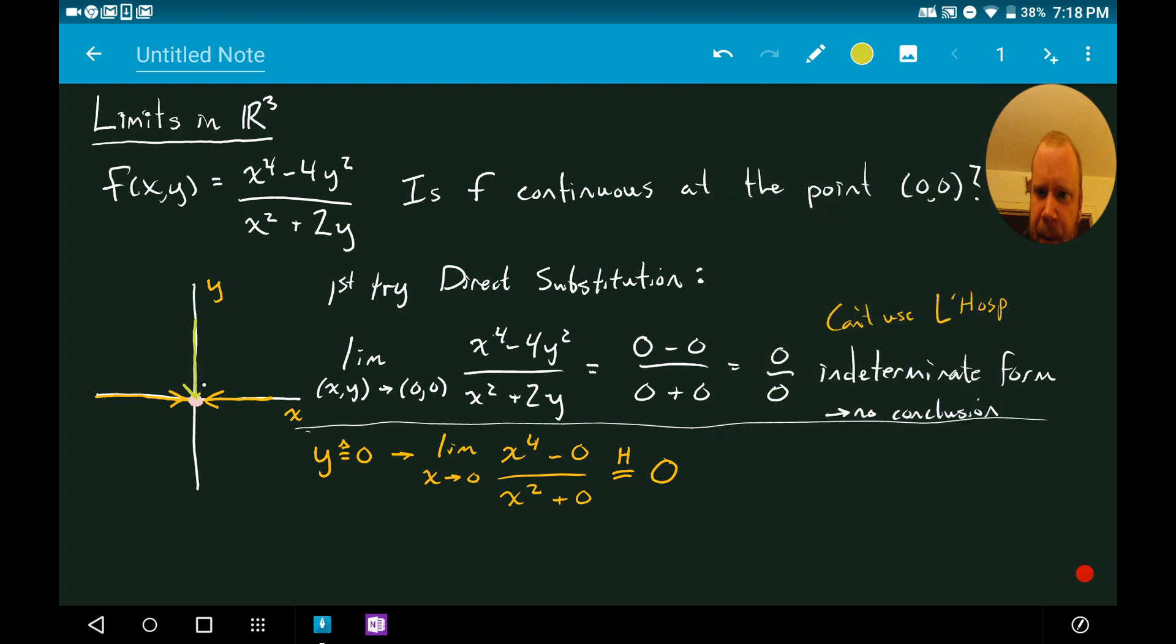The other line we can try is going to be this one where we set x equal to zero. So that's going to be our limit as y approaches zero now. So that's going to be, x is set equal to zero now, so it's definitely going to be zero minus 4y squared divided by zero plus 2y. I'm sorry, this should have a squared in here. So this one, once we cancel that out, we can say this is going to be negative 2 in that case.